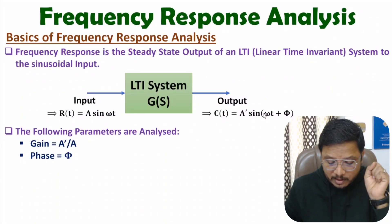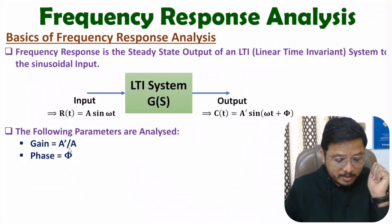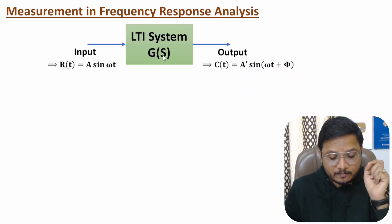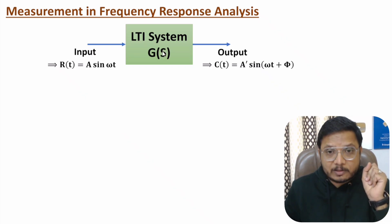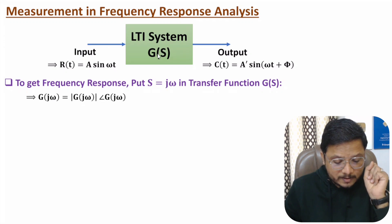Here, input and output frequency is the same. Now the question is how to measure this. We have an LTI system with transfer function G(s). First, we substitute s = jω. By substituting s = jω, we get two components: one is magnitude, that is |G(jω)|, and second is phase, that is the angle of G(jω).